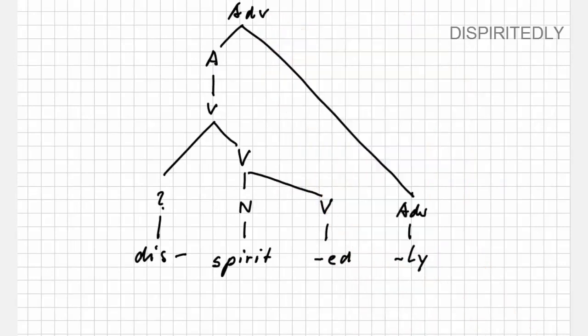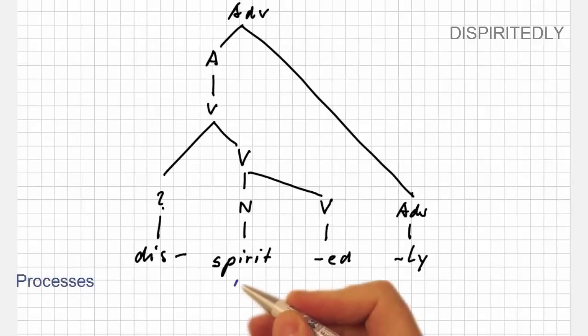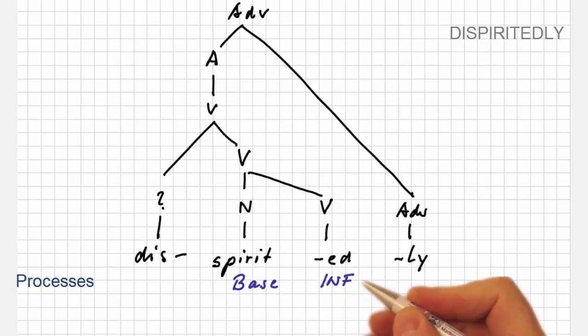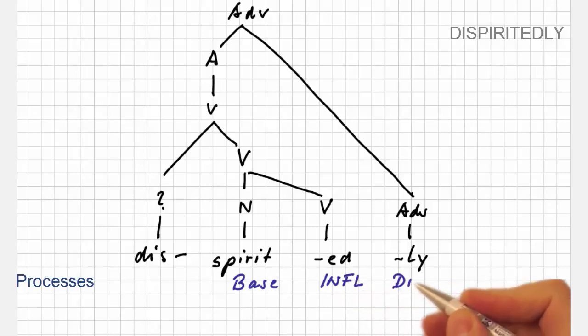The morphological processes involved can easily be described. Spirit is the base form, '-ed' is an inflectional process, and the remaining affixes form derivatives.